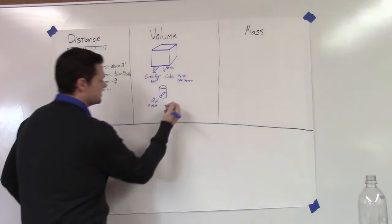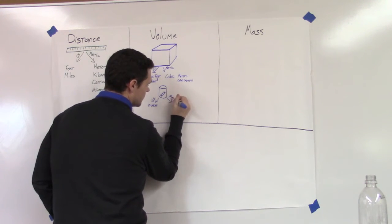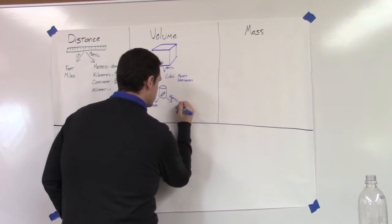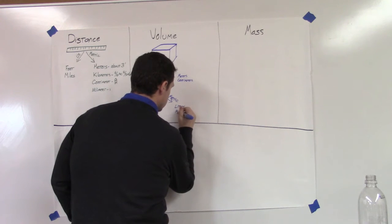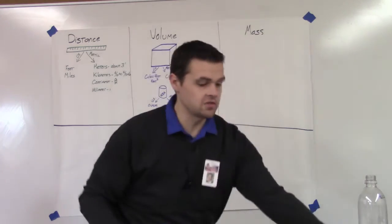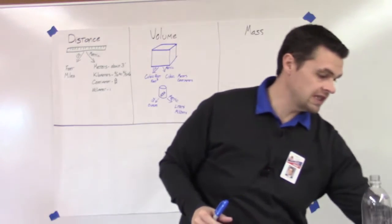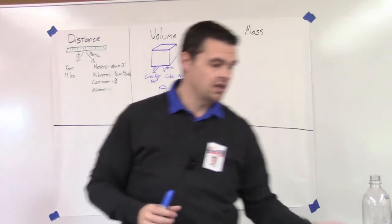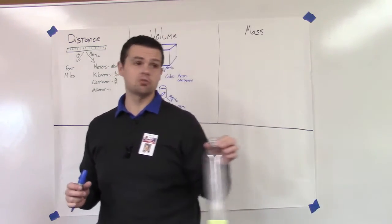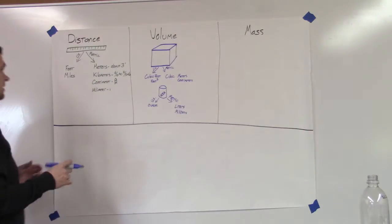In the metric system, when measuring liquids, they use liters or milliliters. This bottle right here is one liter. Milliliters are really small little units. And a kiloliter — a thousand liters — would be enough to fill up a small hot tub.